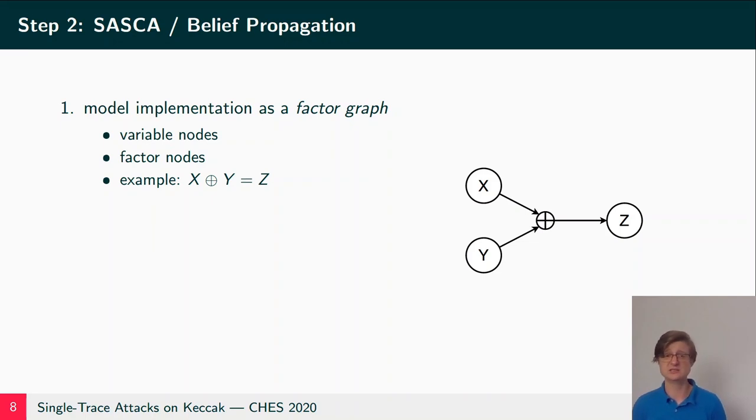One very efficient method that can achieve this are soft analytical side-channel attacks proposed by Veyrat-Charvillon et al. at AsiaCrypt 2014. Now how such a soft analytical side-channel attack works is the following. First we need to build a factor graph which is a graphical model of the implementation of the cryptographic primitive. This graph consists of two sets of nodes. The first are variable nodes which model the intermediates that occur during the execution of the algorithm. And the second set are the factor nodes which describe how the variables are connected to each other.